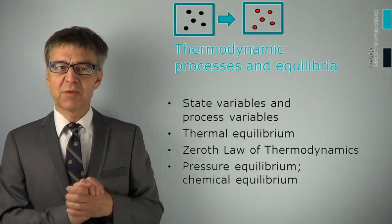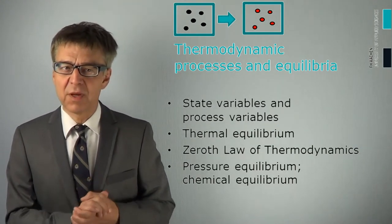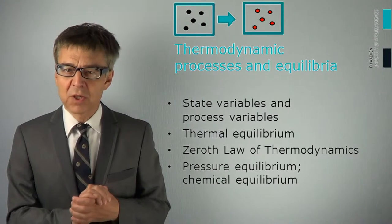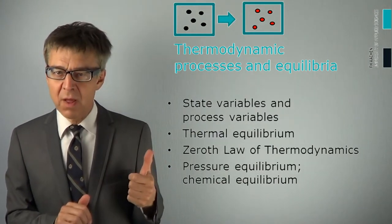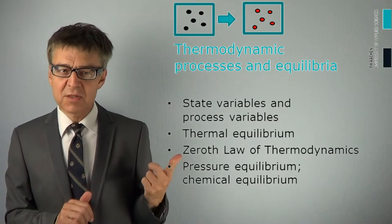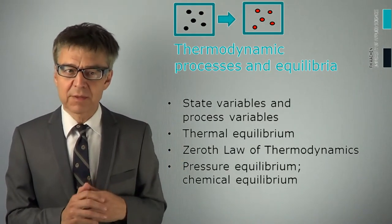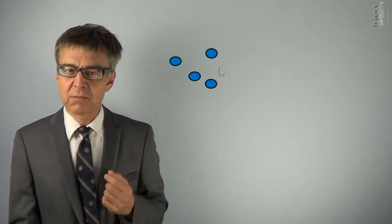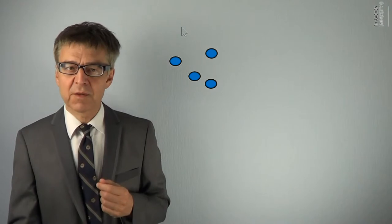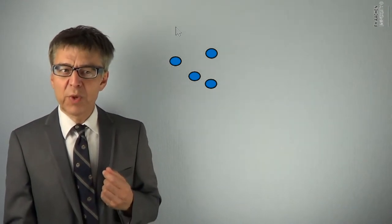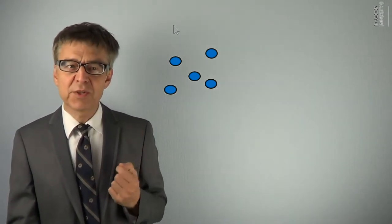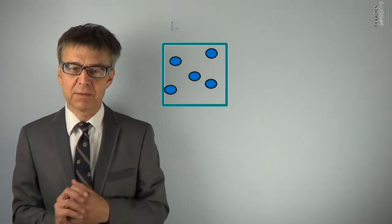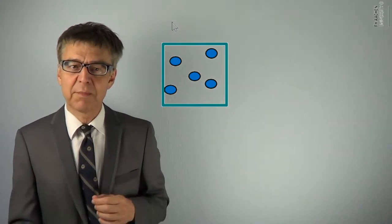We have discussed how to describe the state of a system in numbers. It takes the number of the components, the number of the phases and a certain number of state variables. Now we want to change the state of our system. Let's consider a homogeneous system composed of identical particles. This is a one phase, one component system, according to Gibbs phase rule. We need two and only two state variables to describe it. For instance, temperature and pressure.